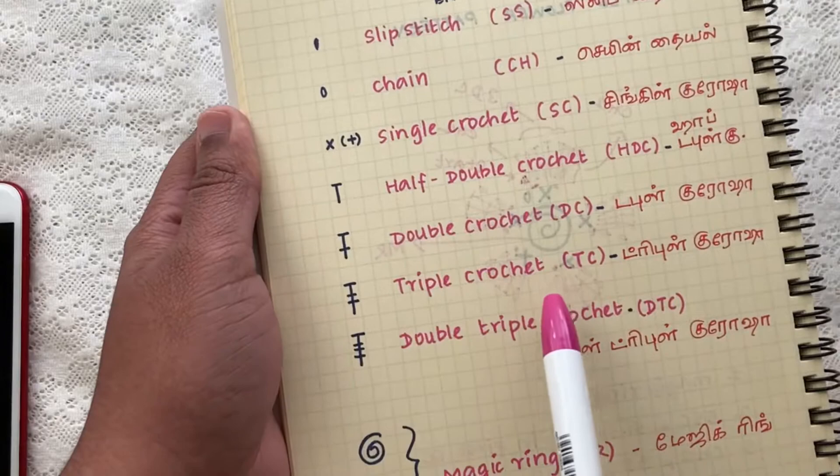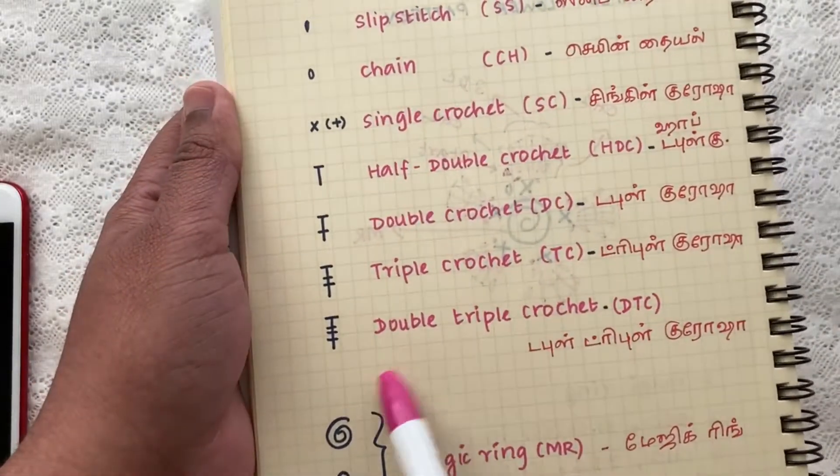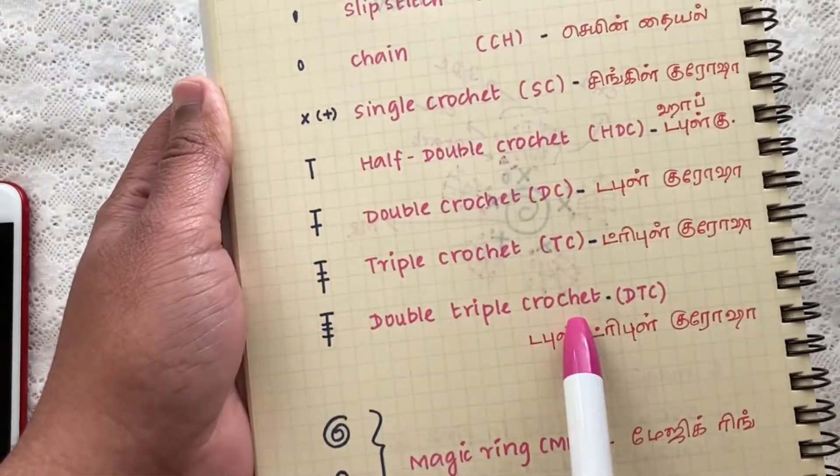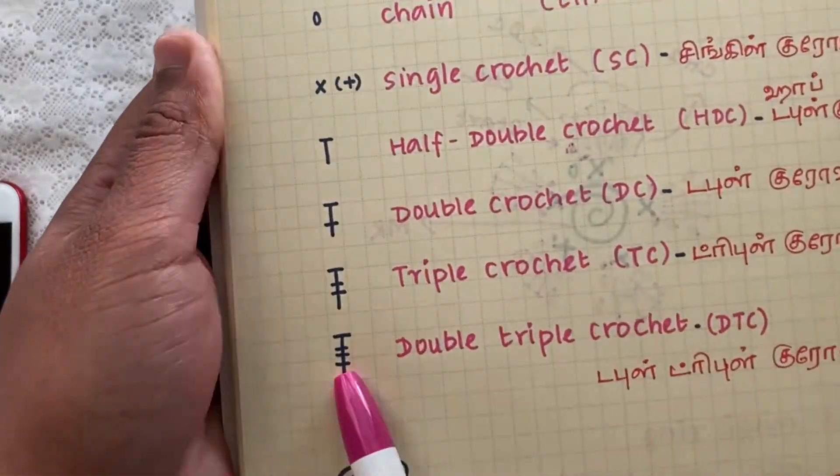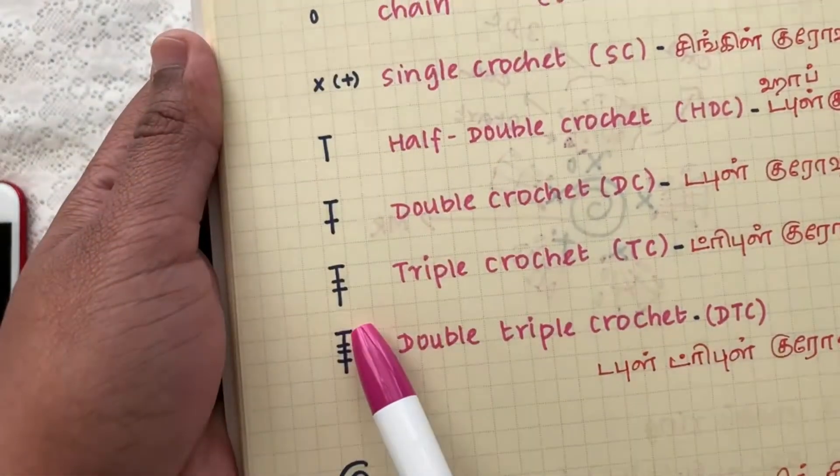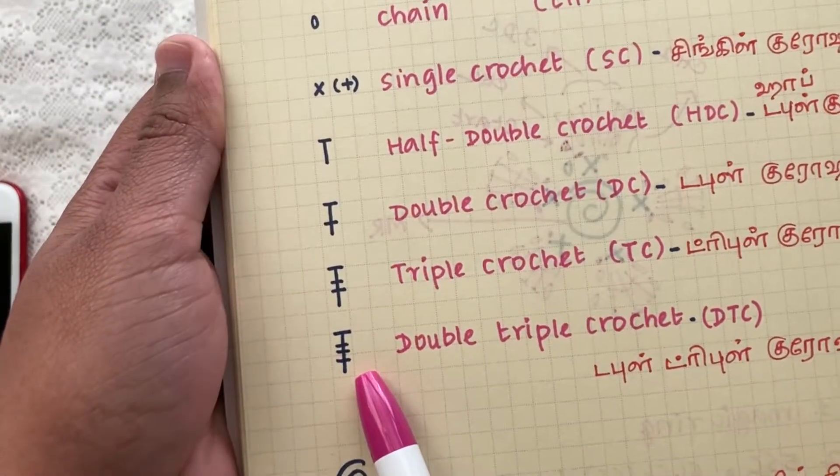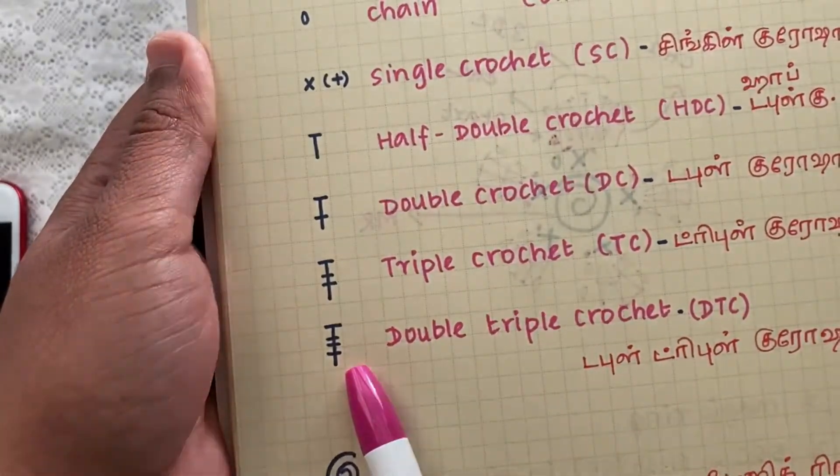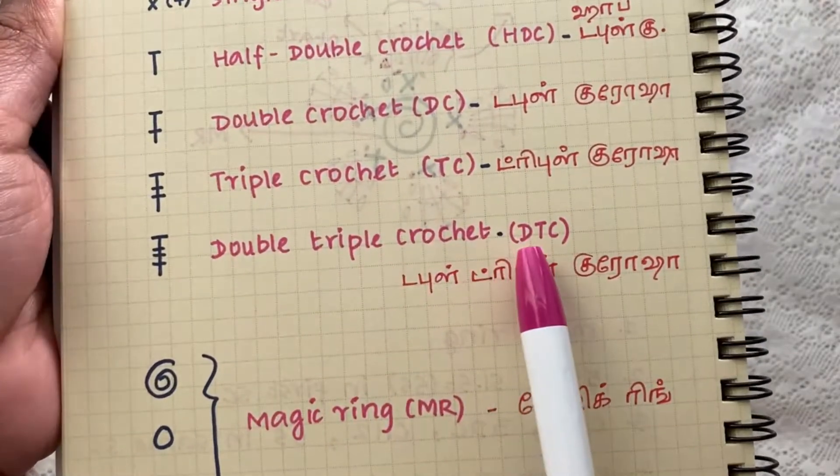The next one is double triple crochet. For the double triple crochet, the symbol is this one, and as I have already mentioned we have one, two, three, four - four horizontal bars. That means you have to pull through four times and the abbreviation for double triple crochet is DTC.